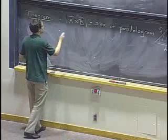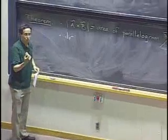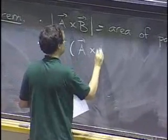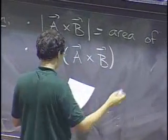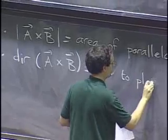And what's even more magical is that not only is the length remarkable, but the direction is also remarkable. The direction of a cross b is perpendicular to the plane of the parallelogram.